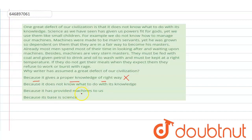So, this is not a defect that it has provided machines to us. D is because its base is science. This is not a drawback. So, these two can also be eliminated. And the correct answer is option B.